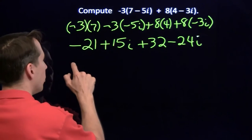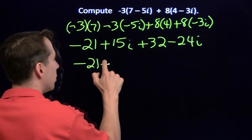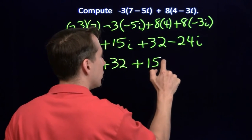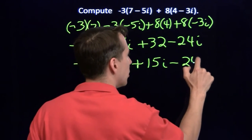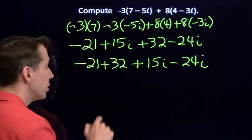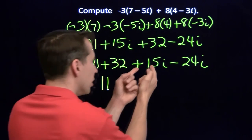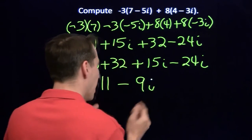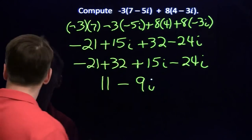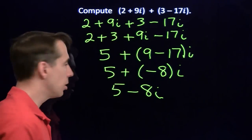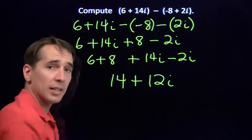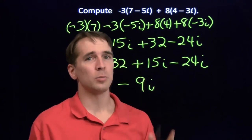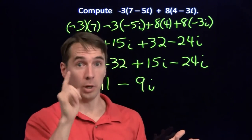And you know the drill from here, we put the real parts together, and we put the imaginary pieces together. Negative 21 plus 32, that gives us 11. 15i minus 24i gives us a minus 9i. So we've got adding complex numbers down, subtracting them, we've got that too. We've got a little more complicated arithmetic here, so we can add them, we can subtract them. And you know what comes next, we're going to multiply them.